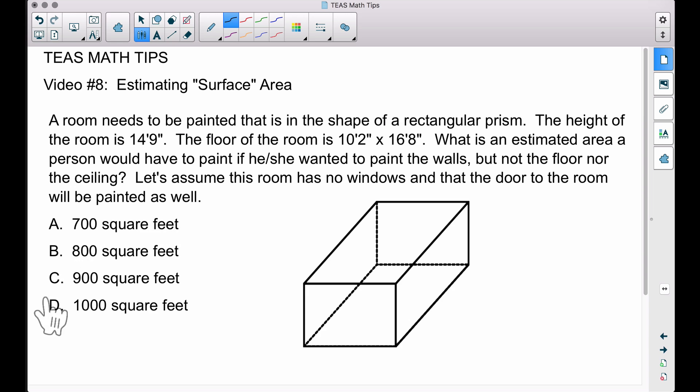When you're dealing with estimation and you have multiple choice, your answers are probably going to be far enough apart such that one of them will be the obvious answer. We got 14 feet 9 inches. Since 6 inches is half a foot, anything 6 inches or higher I'm going to round up to the next foot. Anything less than 6 inches I'm going to keep at that foot.